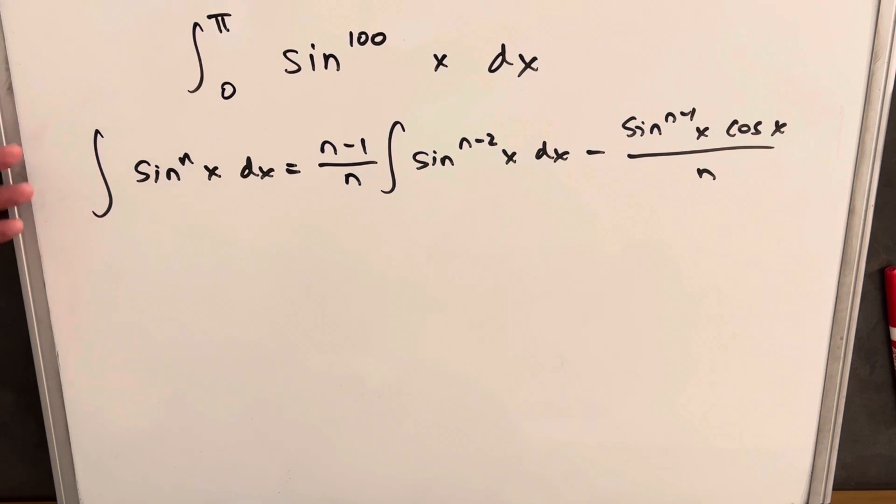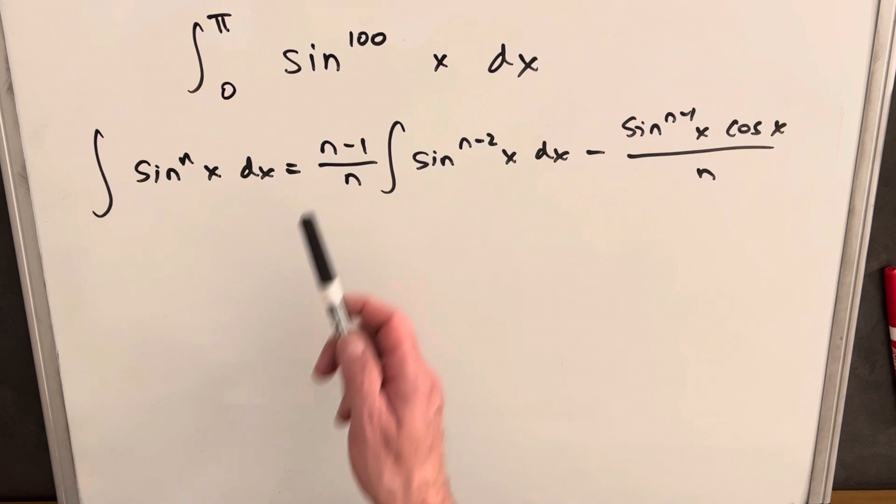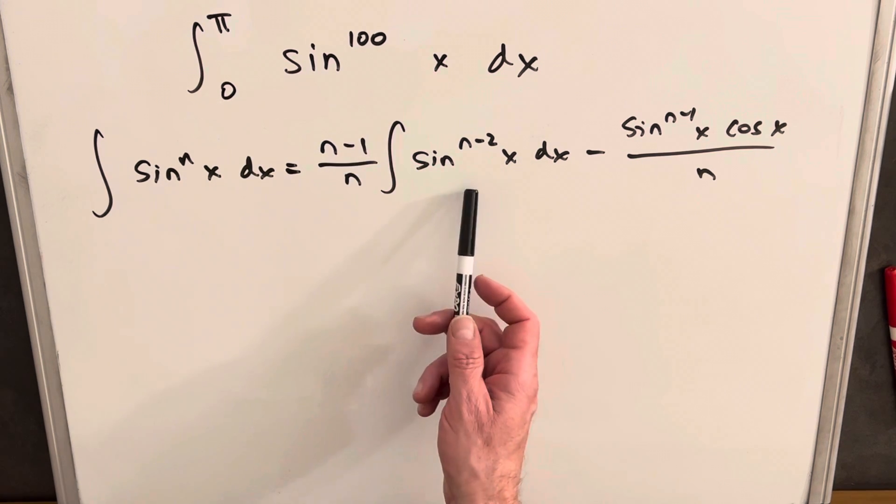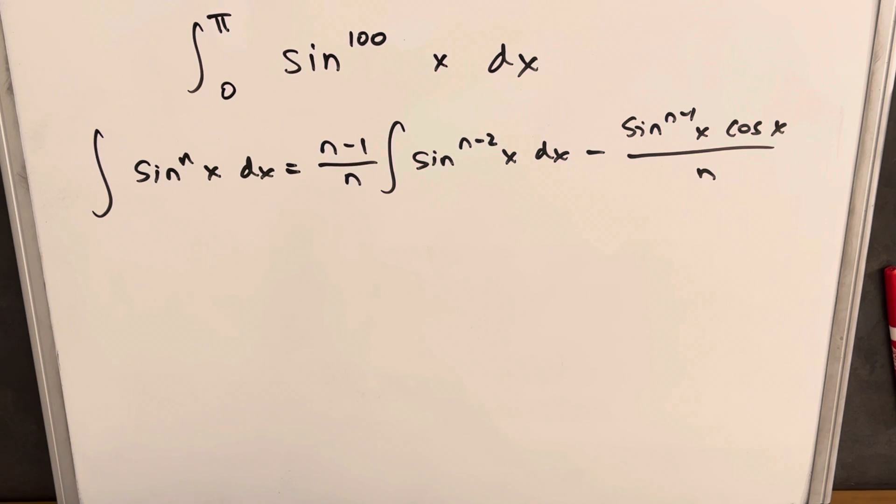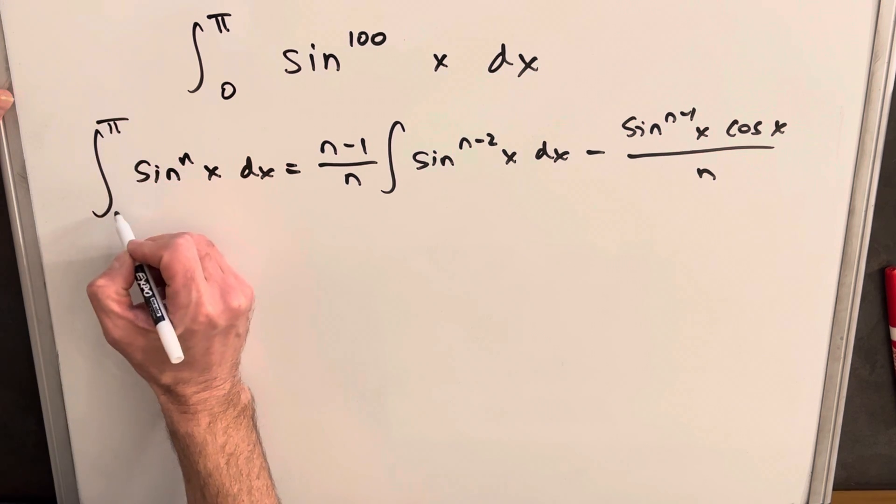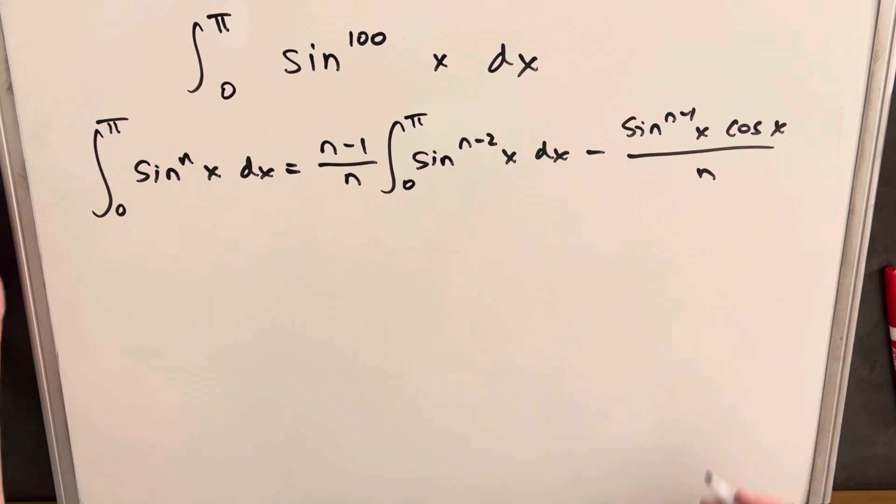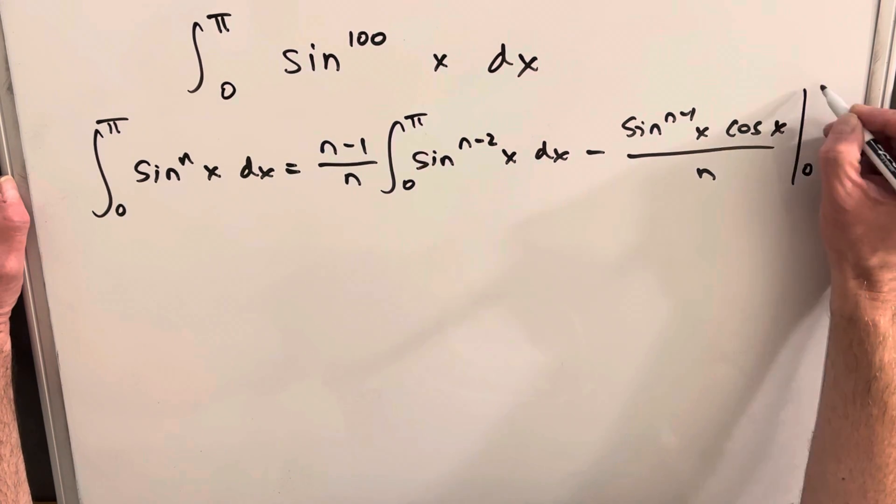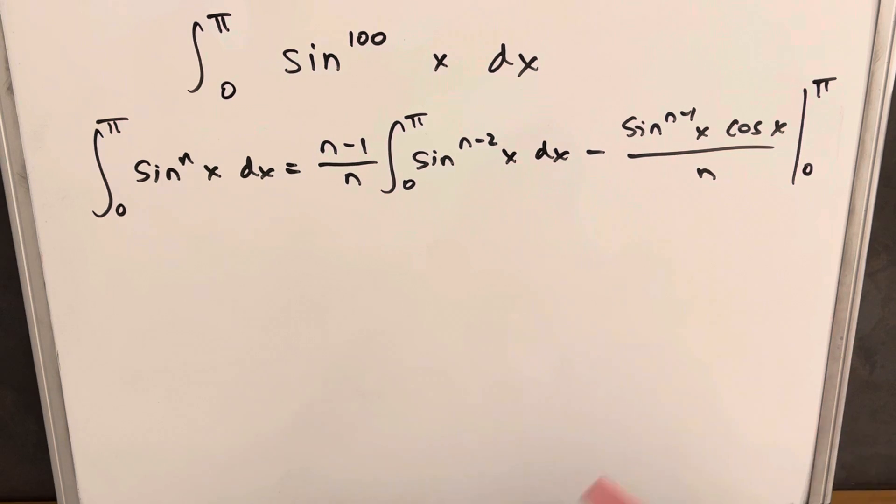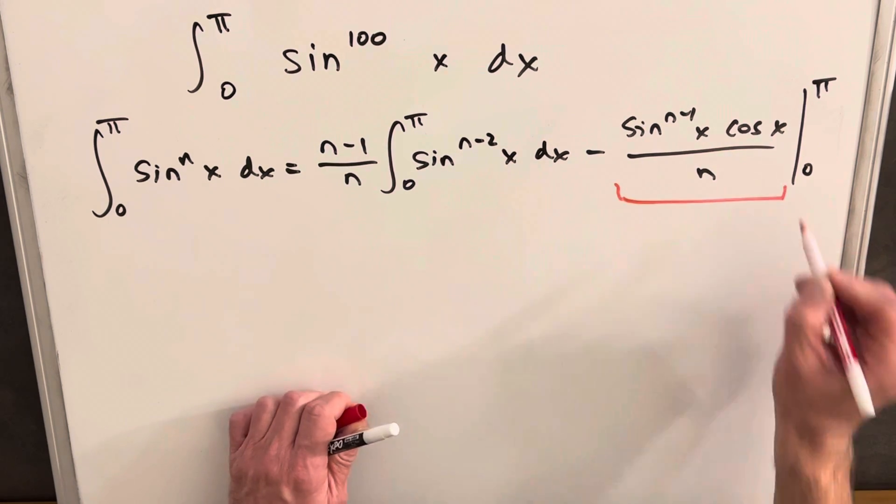And this is nice, and this can work if we had a reasonable power. Maybe it was like sine to the 8th. We can maybe just use this a few times and get to something we can calculate. Now because our power is 100, this is not going to really get us there very fast, so we're going to need some other things. Let's look at what happens when we have our bounds on this. Let's just use the same bounds we have here, 0 to pi, and then we'd have to evaluate this from 0 to pi as well at the end.